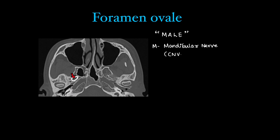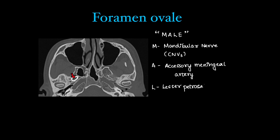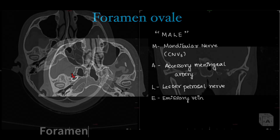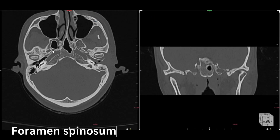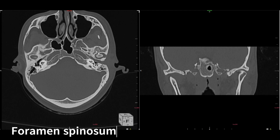M for mandibular nerve, which is the third segment of the trigeminal nerve (V3). A for accessory meningeal artery, which supplies the dura. L for lesser petrosal nerve. E for emissary veins. So the mnemonic is M-A-L-E.